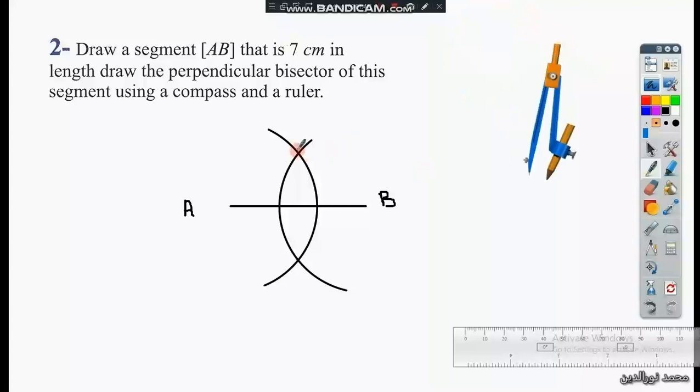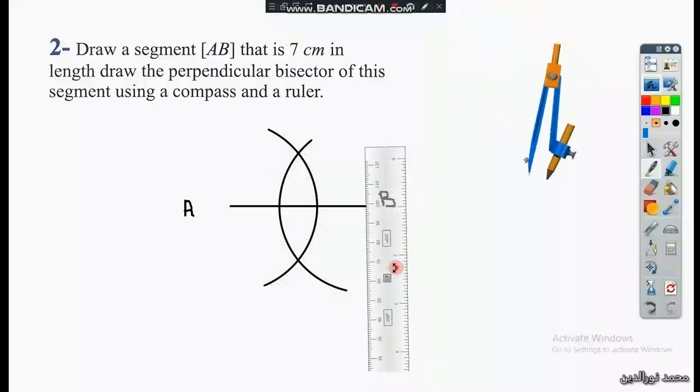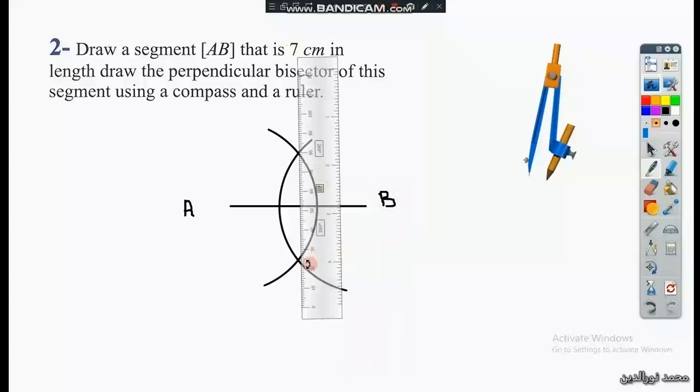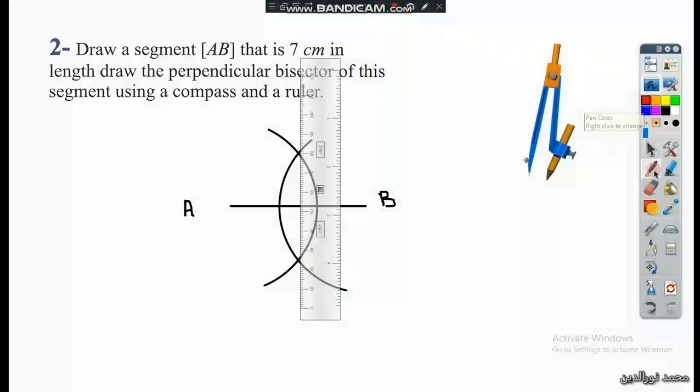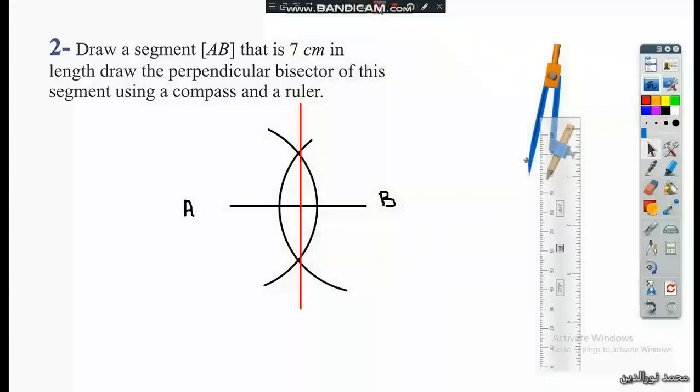As we notice here, the two arcs intersect at two points, and then we have to join these points together to have the perpendicular bisector of the segment. And then we draw the perpendicular bisector. So the red line is the perpendicular bisector of the segment AB.